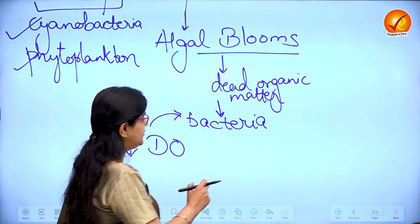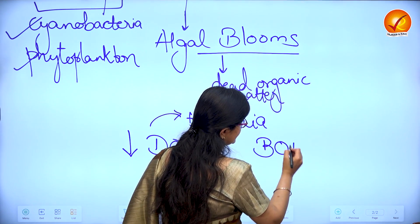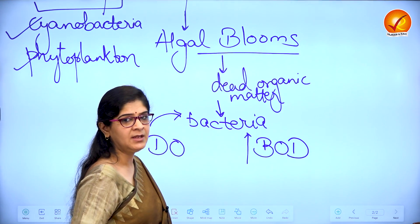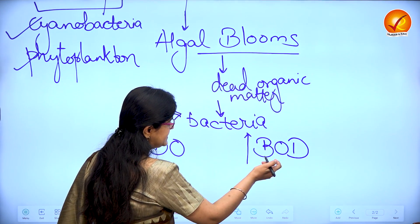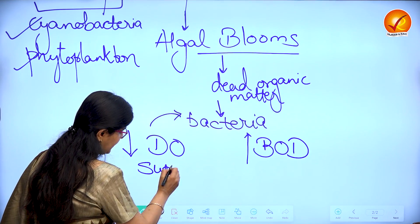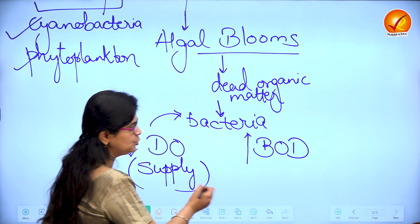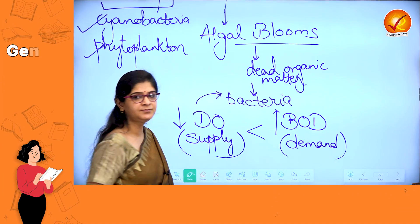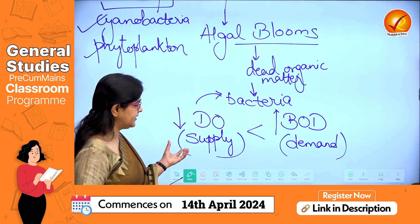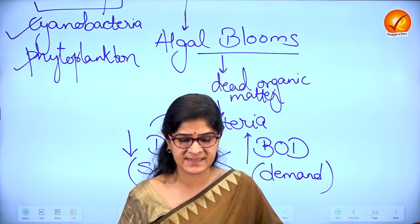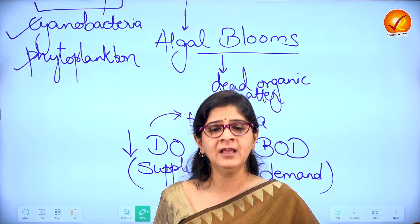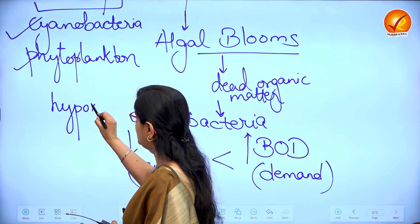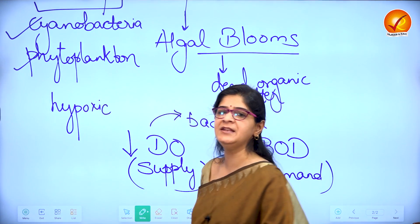Meanwhile, the oxygen demanded by the bacteria — called biological oxygen demand or BOD — starts to increase. So the oxygen demanded by the bacteria, that's BOD, increases, whereas the dissolved oxygen supplied by the water body falls. We have demand being more than the supply of oxygen. As supply reduces over time, bigger aquatic organisms like fishes may start choking to death because low oxygen conditions — also referred to as hypoxic conditions — are prevailing.